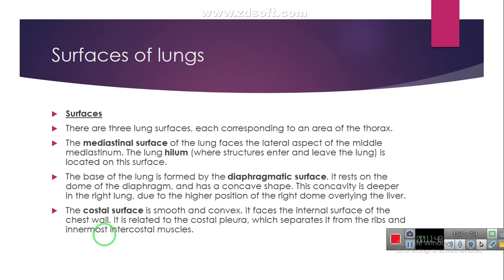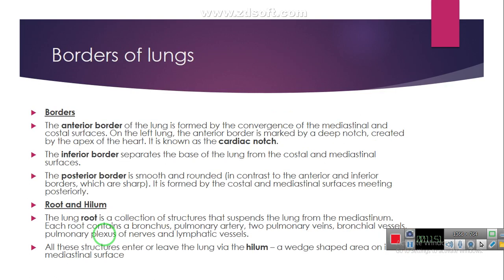The lung has three borders. The anterior border is formed by the convergence of the mediastinal and costal surfaces. On the left lung, the anterior border is marked by a deep notch created by the apex of the heart, known as the cardiac notch. The inferior border separates the base of the lung from the costal and mediastinal surfaces. The posterior border is smooth and rounded, in contrast to the sharp anterior and inferior borders.